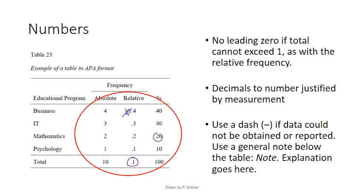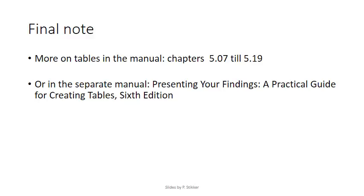So if I wouldn't know this value of 20 for some reason, I can write down a dash. Underneath I should write a note in italic, followed by a dot, explaining what the dash means. This was a brief summary of what can be found in chapters 5.07 to 5.19 of the APA manual, 6th edition. APA also has a separate manual called 'Presenting Your Findings: A Practical Guide for Creating Tables,' which goes into even more detail.